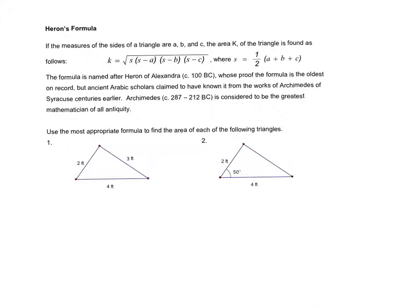Our final formula in sections 6.1 and 6.2 is Heron's Formula. This is interesting because its proof is the oldest on record, though some claim it existed earlier. It's just another equation for the area of a triangle. In this case the area is called K, and the formula also uses S, which is its own sub-formula that gets plugged in several times.